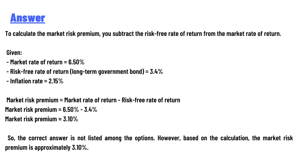To calculate the market risk premium, you subtract the risk-free rate of return from the market rate of return. Given: market rate of return is 6.50%, risk-free rate (long-term government bond) is 3.4%, and the inflation rate is 2.15%. Market risk premium equals market rate of return minus risk-free rate of return.